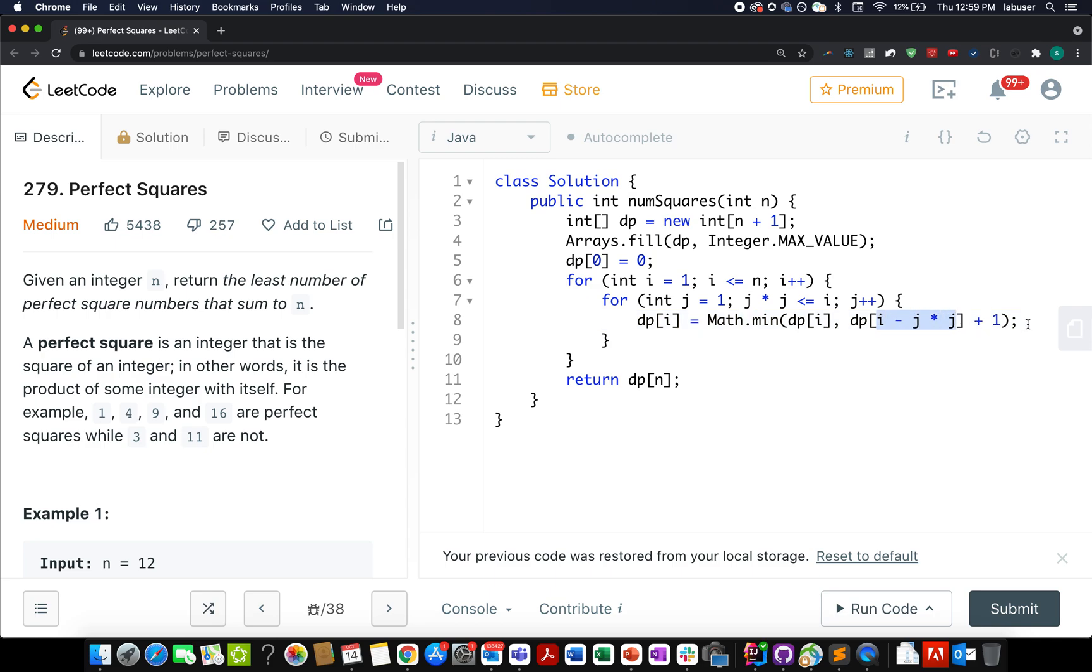And since we are doing this, you need to explicitly add one to the answer because j square is a perfect number. In the end, you simply return dp[n].